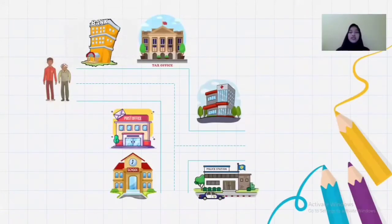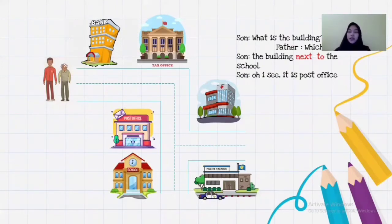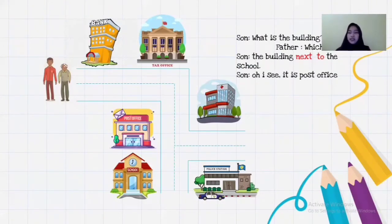Look at the conversation below, between a father and son. Father: 'What is the building?' Son: 'Which one?' Father: 'The building next to the school.' Son: 'Bangunannya terletak di sebelah sekolah.' And the father said: 'Oh, I see. It is a post office.' Ayahnya bilang, 'Oh, itu adalah post office.'